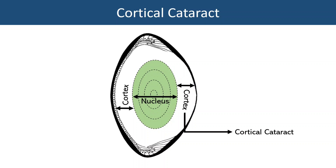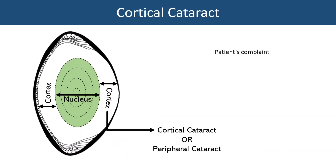As the name tells us, cortical cataract refers to the location of the cataract, which is the cortex located in the periphery of the lens. So cortical cataract is also known as peripheral cataract. Patients with cortical cataract will complain of more loss of vision at night time or in dim light conditions, because the opacity is in the periphery and the pupil will be dilated. This is exactly opposite to nuclear cataract.